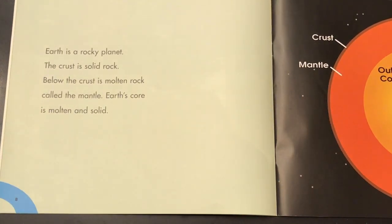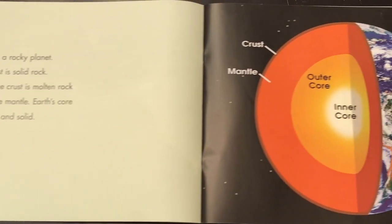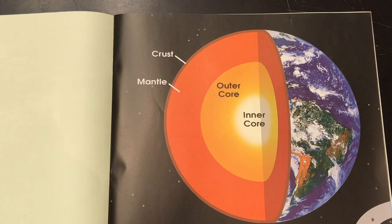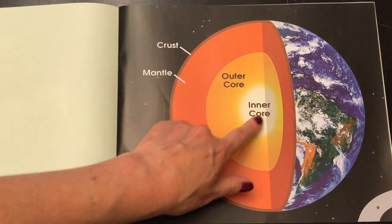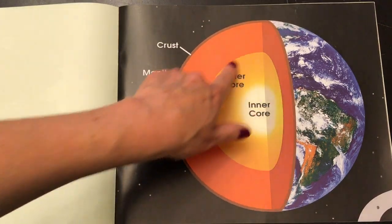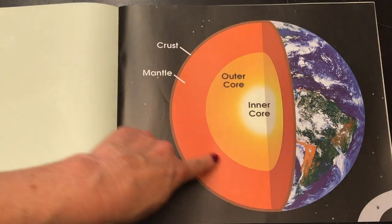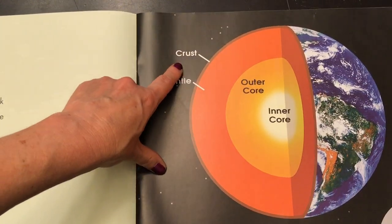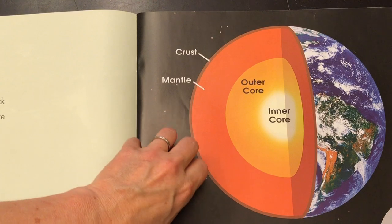Earth is a rocky planet. The crust is solid rock. Below the crust is molten rock called the mantle. Earth's core is molten and solid — very, very hot inside the Earth. So there are the different layers. The inner core and outer core are both part of the core, and then the mantle is this part. The crust is what we walk on and live on — it's the surface. It's actually very, very thin compared to the entire rest of the planet.